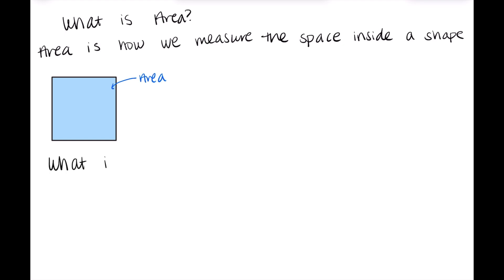That shaded region, that whole blue shaded region, would be what we would call the area. That's all the space inside of the shape. So now that we've gone through the definition and now that we've gone through a visual for area, what is perimeter?